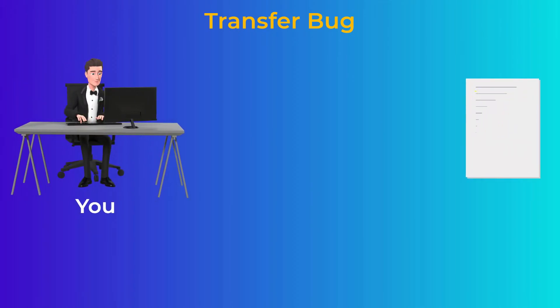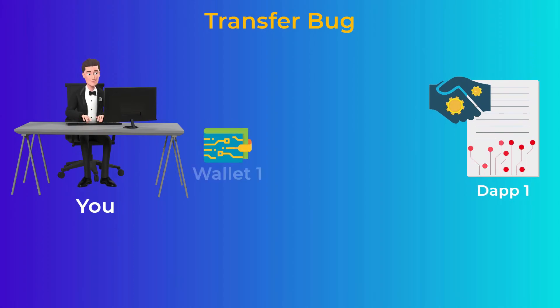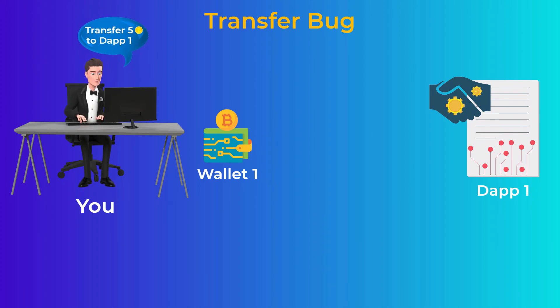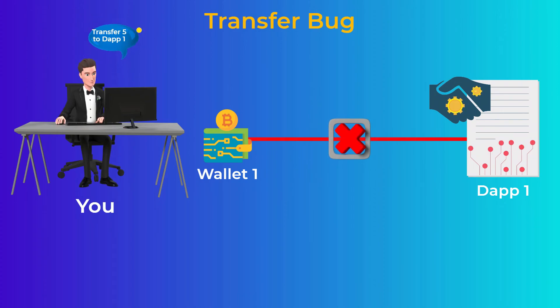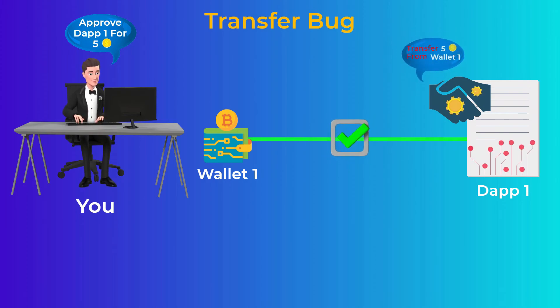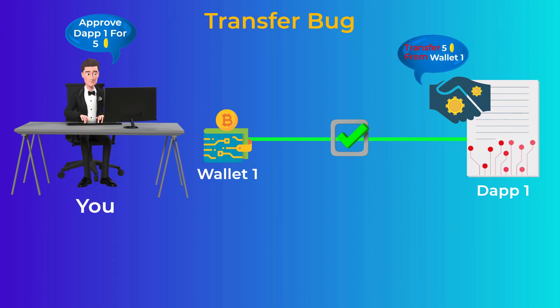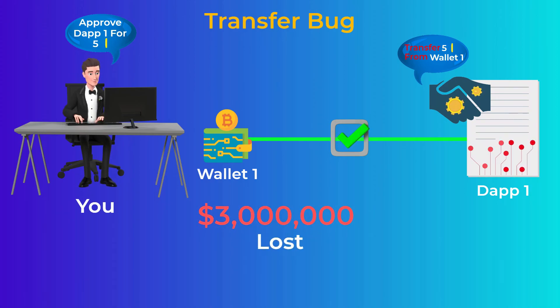Another well-known drawback is something called the transfer bug. When you interact with a DApp or smart contract, if you use the Transfer function instead of the Approve function, your tokens will get stuck and lost forever. You should first use the Approve function to allow the DApp to access your tokens, and then the DApp will use the Transfer From function to take them from your wallet. This bug has caused approximately $3 million US dollars to be lost.